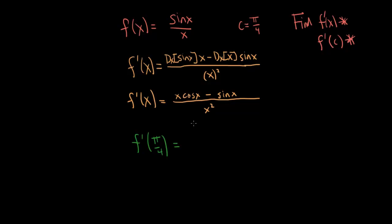Recall that c is just a particular x value. We've used c in chapter 2 and chapter 3 to represent a specific x value. So all we need to do is substitute in pi over 4 for everywhere there is an x in this derivative function. We are finding the slope of the tangent line of f at pi over 4.